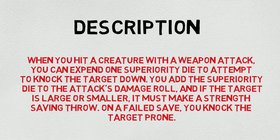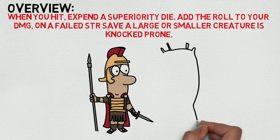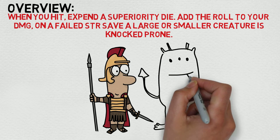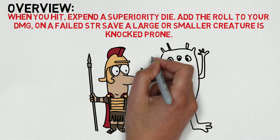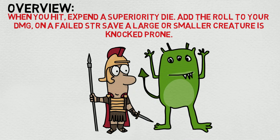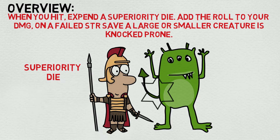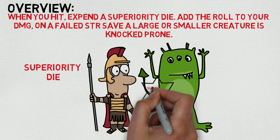Needless to point out, that's incredibly useful — not just for damage potential, but also for turning the flow of battle. To break it down: when you hit, expend a superiority die, add the roll to your damage, and on a failed Strength save, a Large or smaller creature is knocked prone. Pretty interesting and pretty simple in itself.